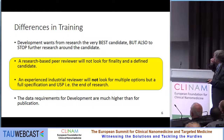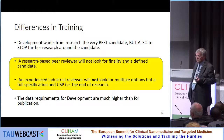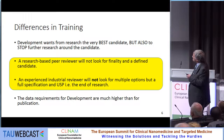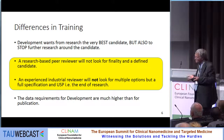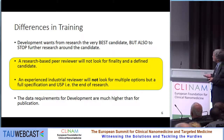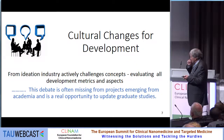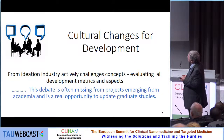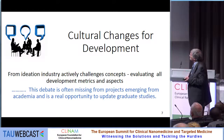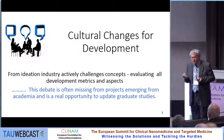Differences in training: development wants from research the very best candidate, but also the stock of research around the candidate. A research-based peer reviewer will not look for finality in a defined candidate. Whilst an industrial reviewer would not look for multiple options, but a full specification and USP. The data requirements for development are much higher than for publication. The debate which often occurs in industry is often missing from academia.